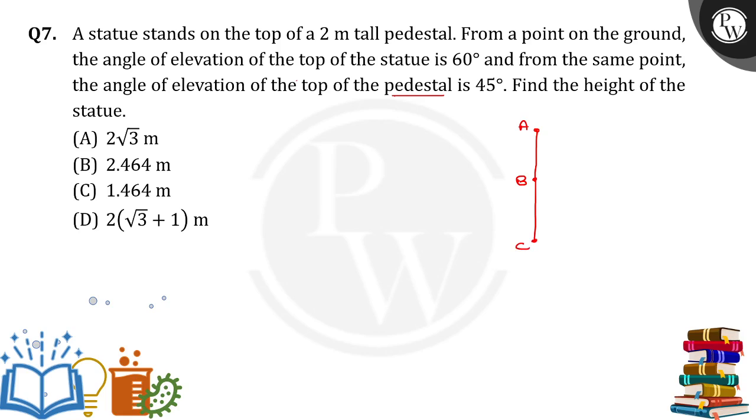The top of the pedestal and the foot of the statue will be at the same point. Now, on the ground from a point D, from a point D on the ground, the angle of elevation of statue, top of the statue is at point A. From D to point A, the angle of elevation is 60 degrees.